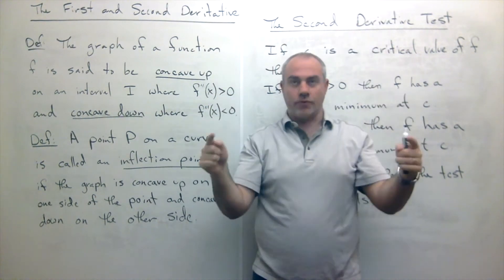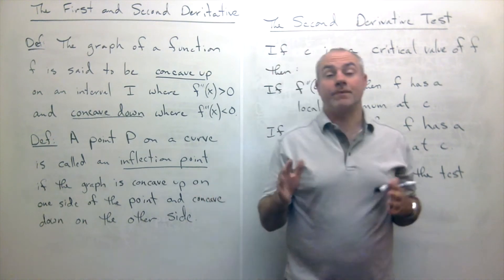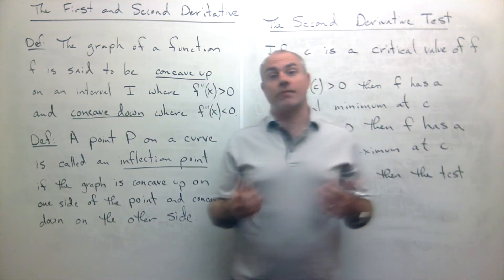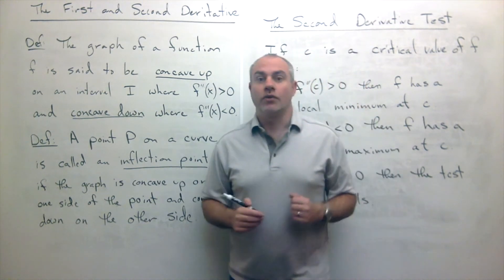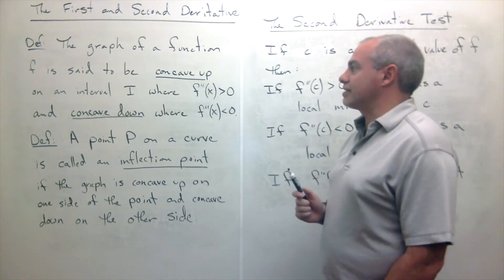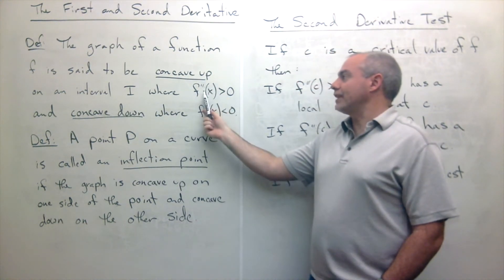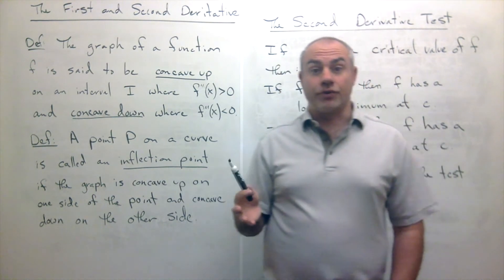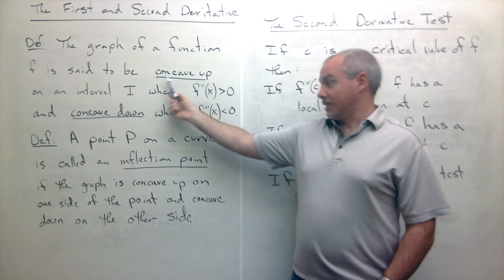You can also have a graph where pieces are concave up and pieces are concave down. What we're really talking about is which way the graph is actually bending — its concavity. What this definition tells us is that being concave up means the second derivative is positive. So if along an interval you have a positive second derivative, then we say that interval is concave up.